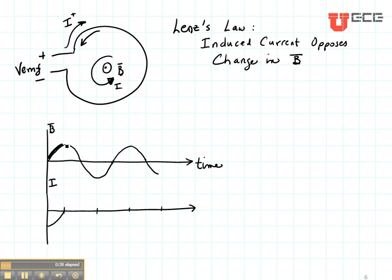And when my magnetic field is not changing, my current is going to be zero. The other places that my current is going to be zero are shown right here, at the tops and the bottoms of my curve. So if the magnetic field is increasing, my current is actually in the negative direction.